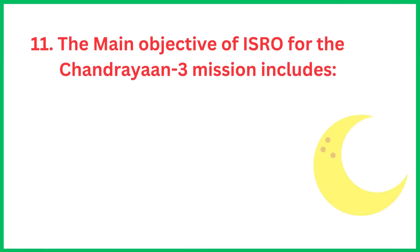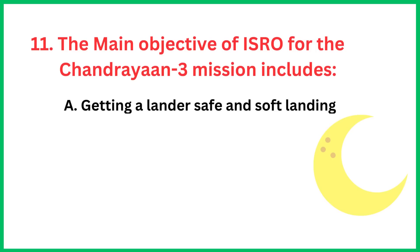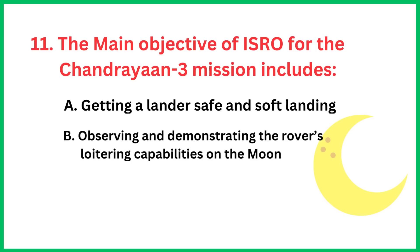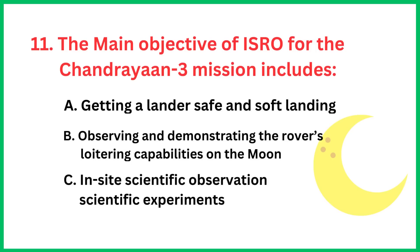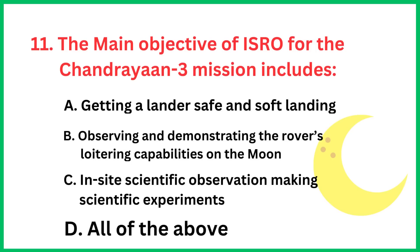The main objective of ISRO for the Chandrayaan-3 mission includes? The correct answer is option D, all of the above.